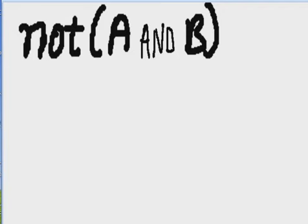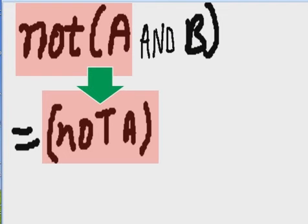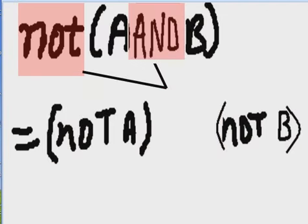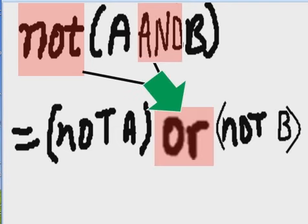NOT A and B. Let's distribute these. NOT A becomes NOT A. NOT B becomes NOT B. NOT AND becomes OR.